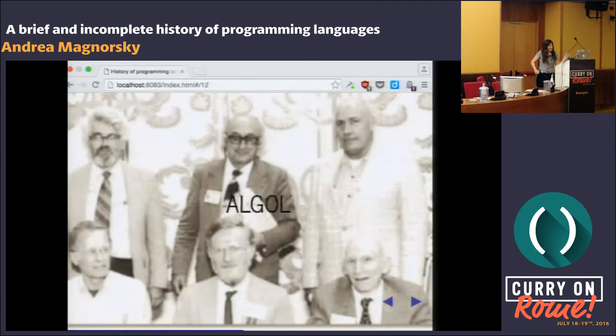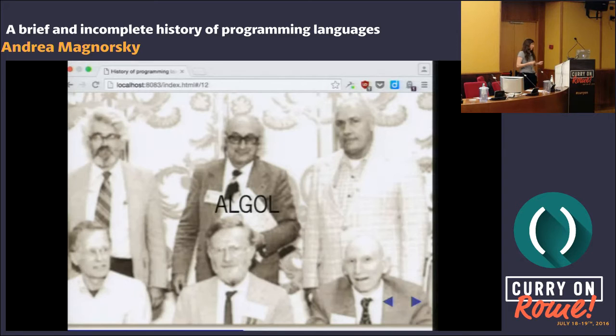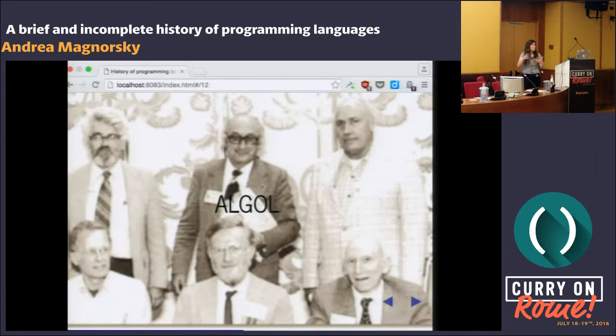With that, we go to ALGOL. So the ACM committee said: let's all get together and try to come up with a common language. That was good because McCarthy was there, John Backus was there, Peter Landin eventually joined. The people involved in the languages we were just talking about — COBOL, Fortran, Lisp — were all in one room or at least talking to each other, and that meant good things.